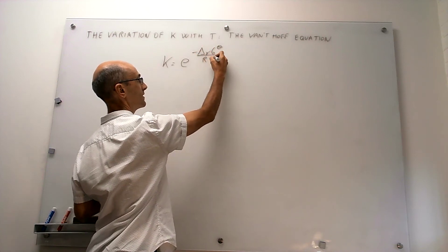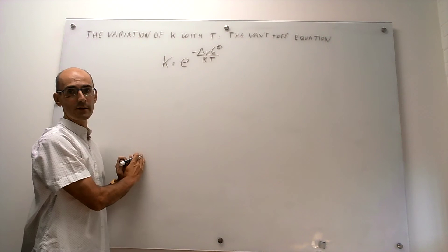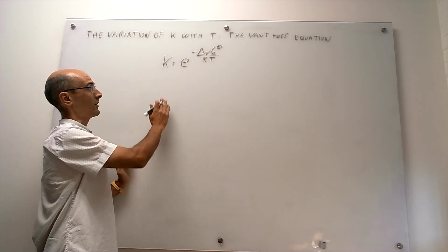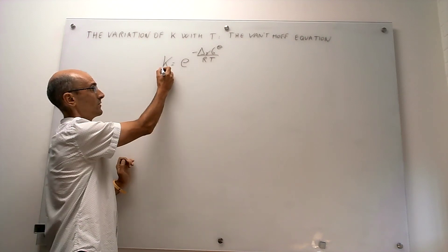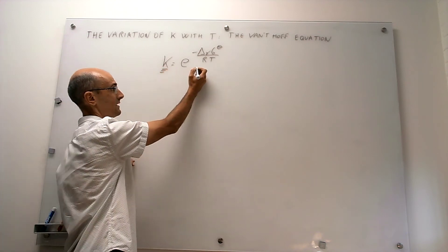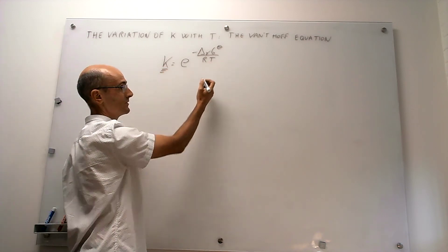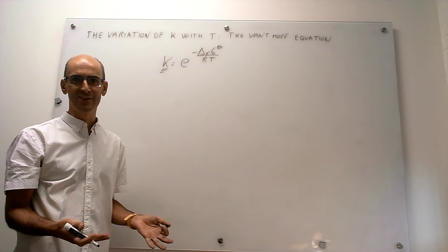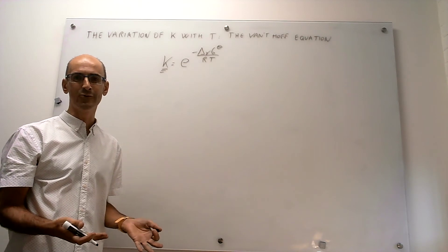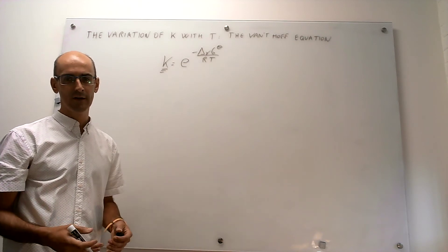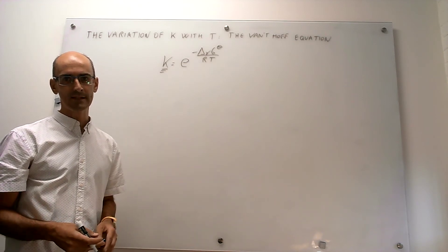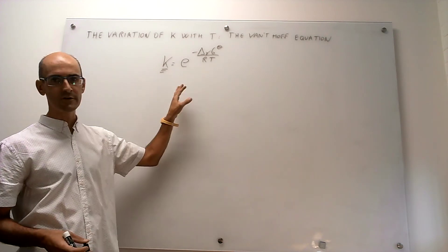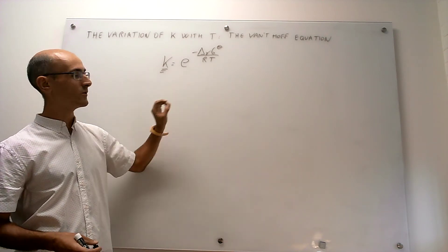Here you clearly have temperature dependence on the equilibrium constant. Notice that that's your equilibrium constant and there's the temperature. The question is, what else is there to know here or to derive when you already have the explicit dependence of the equilibrium constant on temperature in this expression?